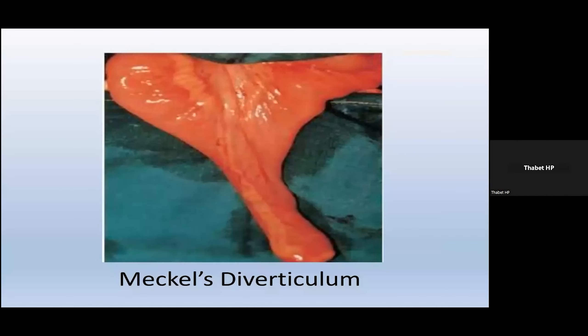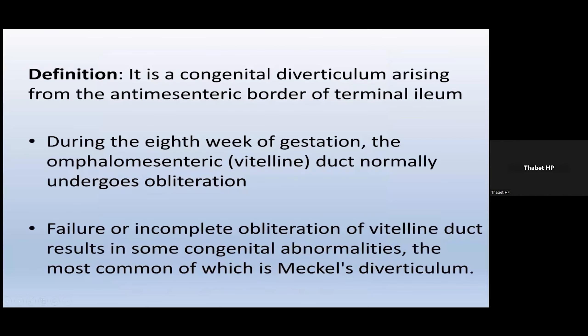Meckel's diverticulum is a congenital diverticulum arising from the antimesenteric border of the terminal ileum. It is a congenital anomaly: during the eighth week of gestation, the omphalomesenteric duct — also called the vitelline duct — normally obliterates. If it remains patent, it forms the diverticulum. The failure of incomplete obliteration of the vitelline duct results in some congenital abnormalities, the most common of which is Meckel's diverticulum.